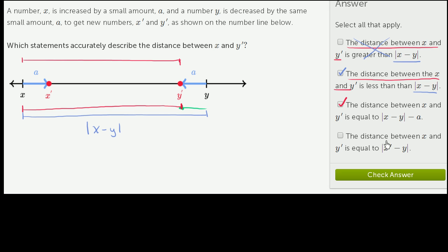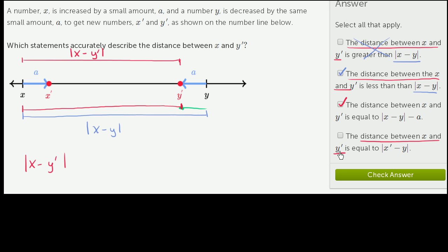The distance between x and y prime is equal to x prime minus y. Let's think about this. The distance between x and y prime can be written as the absolute value of x minus y prime. We want to compare that to the absolute value of x prime minus y.